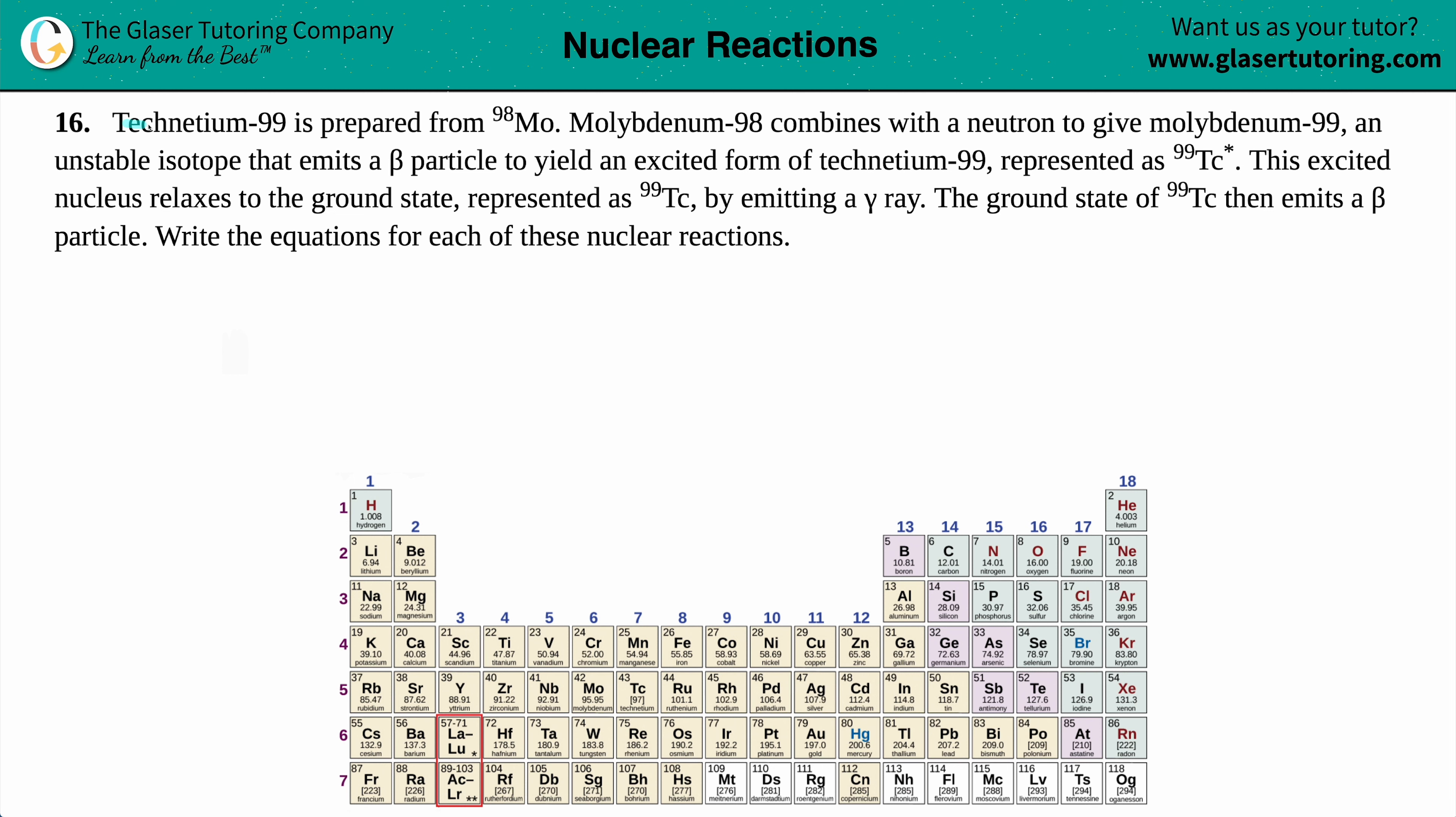Number 16, technetium-99 is prepared from molybdenum-98, and this molybdenum-98 combines with a neutron to give molybdenum-99, which is an unstable isotope, which then emits a beta particle to yield an excited form of technetium-99, which can be represented by this Tc-99 star. Now this excited nucleus relaxes to the ground state represented by Tc-99 by emitting a gamma ray, and then this ground state of technetium-99 then emits a beta particle. Write the equations for each of these nuclear reactions.